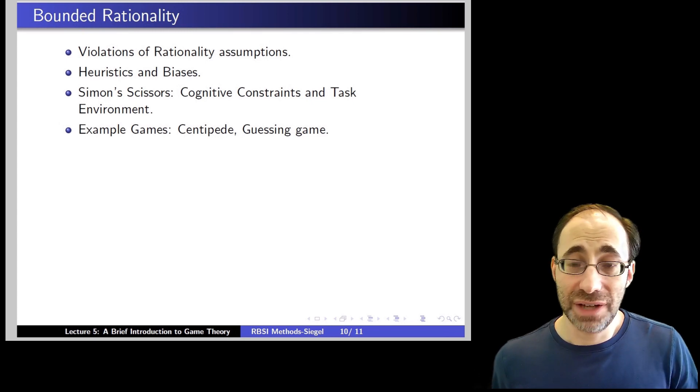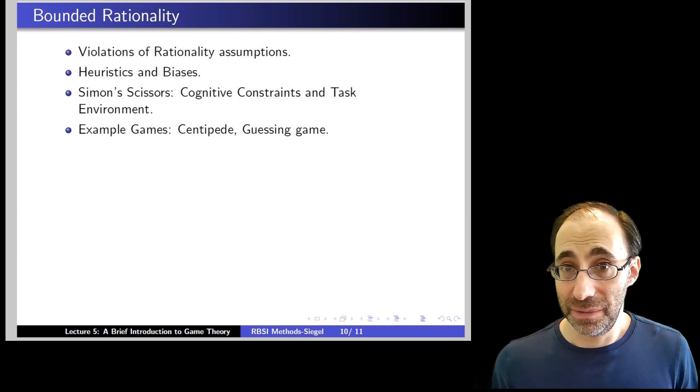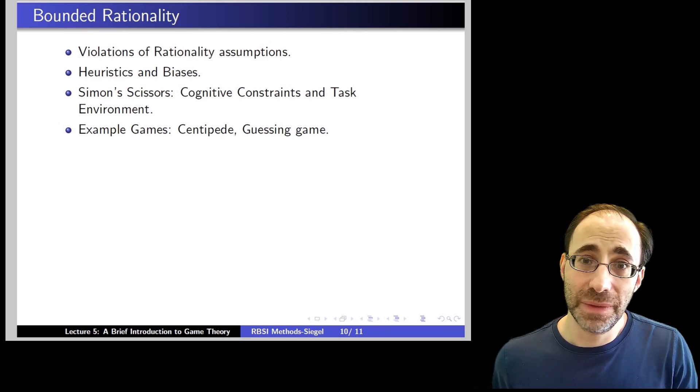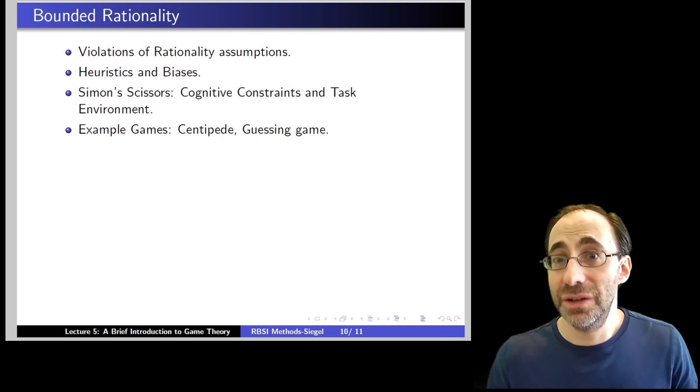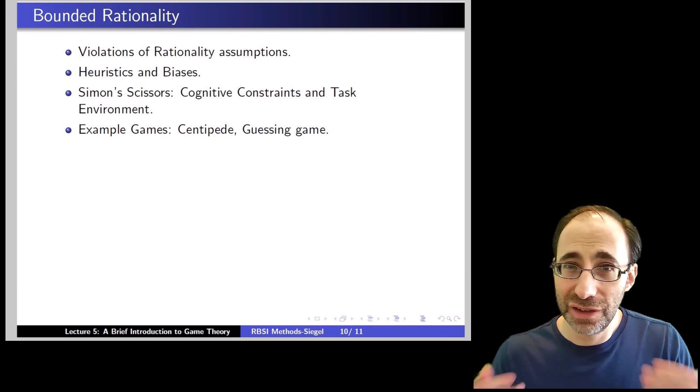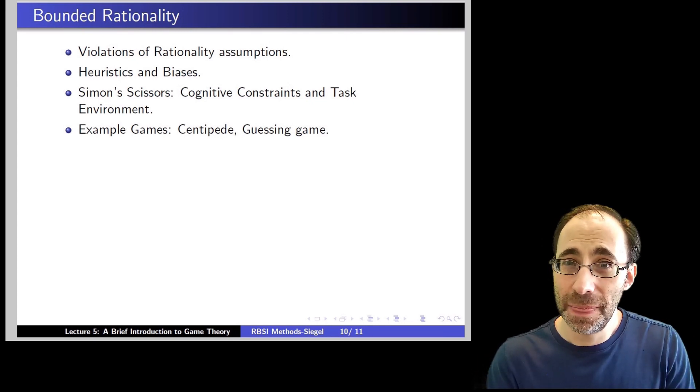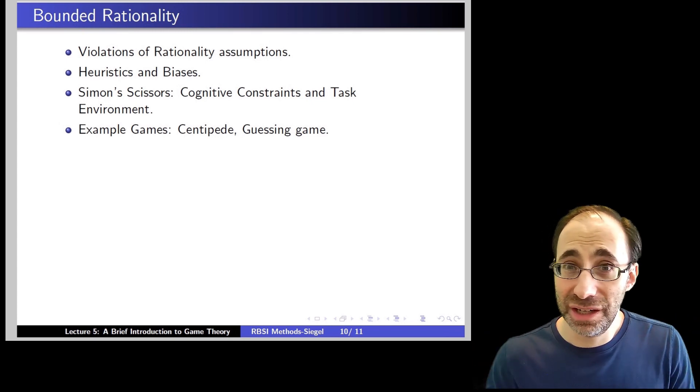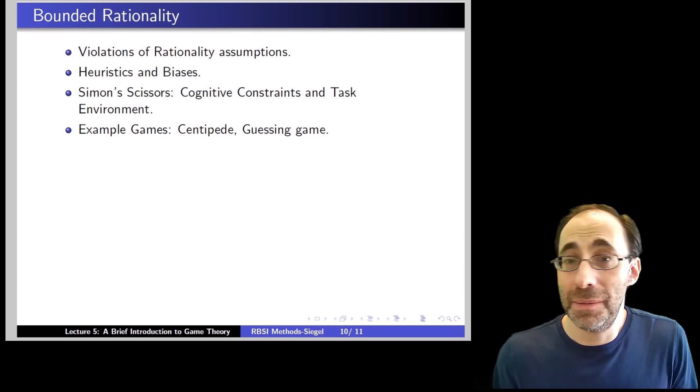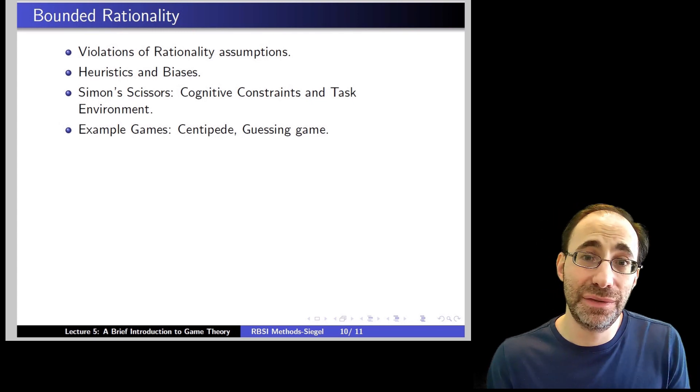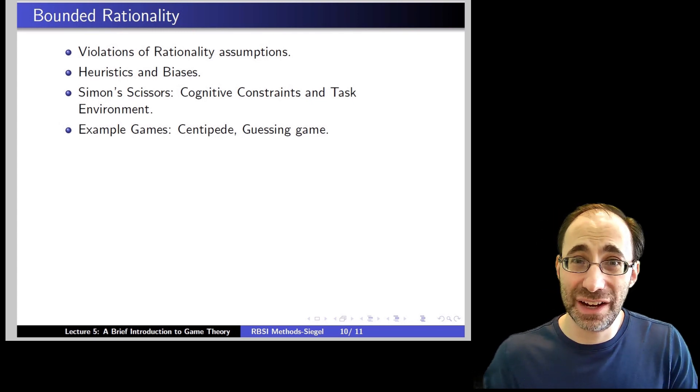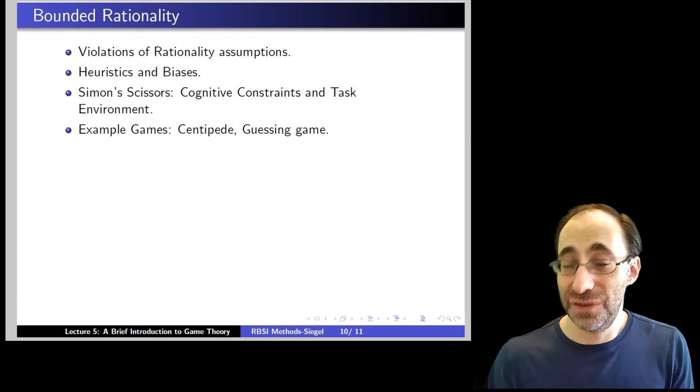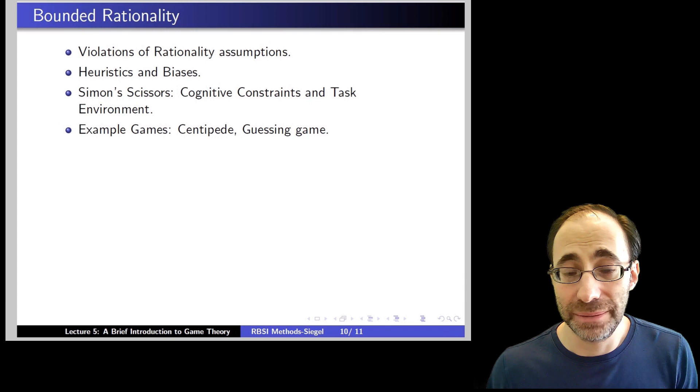You need to be constrained cognitively, but also have a difficult enough task environment that the constraints begin to bind. So a game like chess or go is obviously a difficult task environment because no one can deal with that. But even the cereal example, in which there's a lot of cereals, the level of attention you're willing to pay becomes binding. In contrast, you might take the same level of attention, but if there are only two cereals, you might make the optimal choice because the task environment is just simple enough.